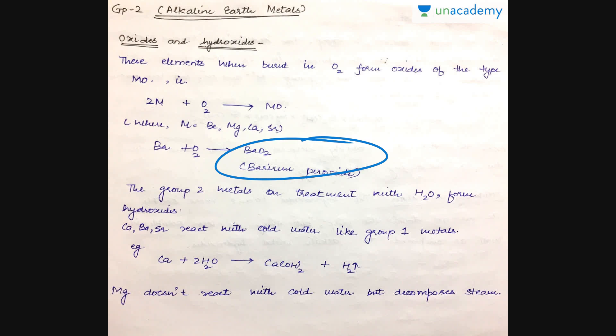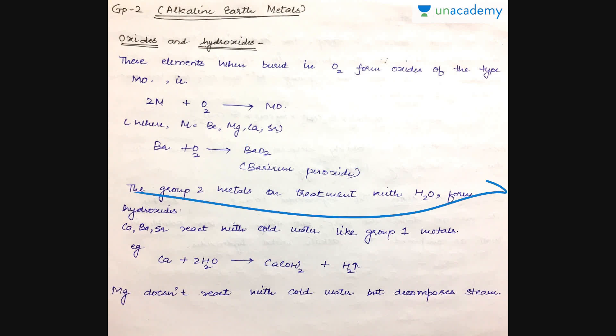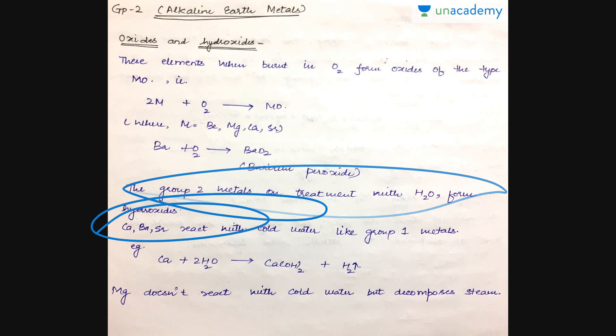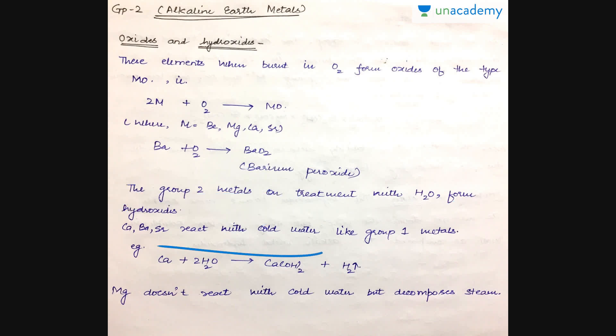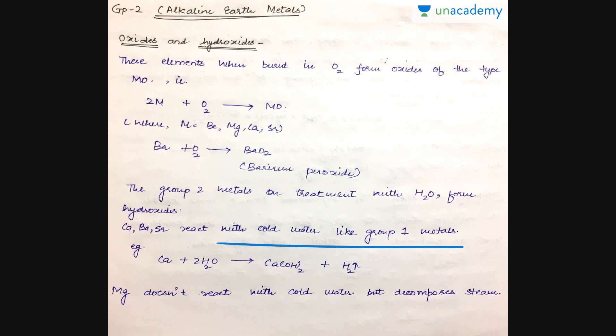Group 2 metals on treatment with water form hydroxides. Calcium, barium, strontium, etc. react with cold water like group 1 metals, whereas magnesium does not react with cold water and needs steam. It decomposes steam to form magnesium hydroxide.